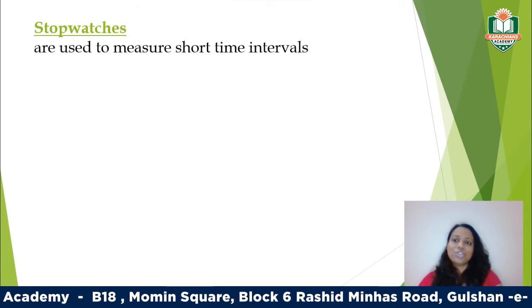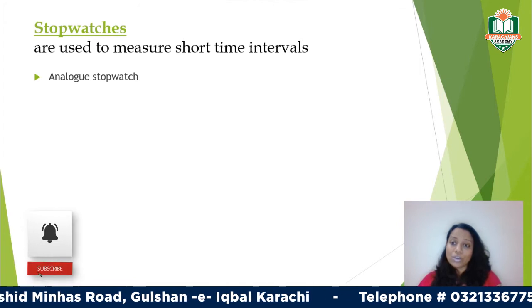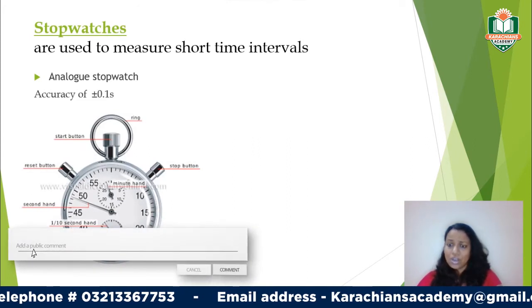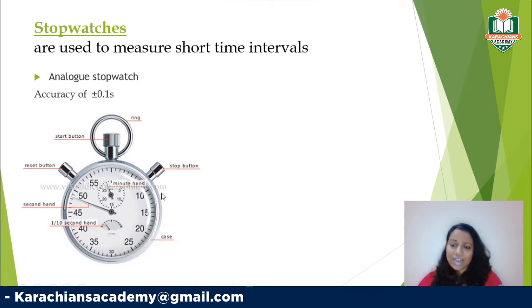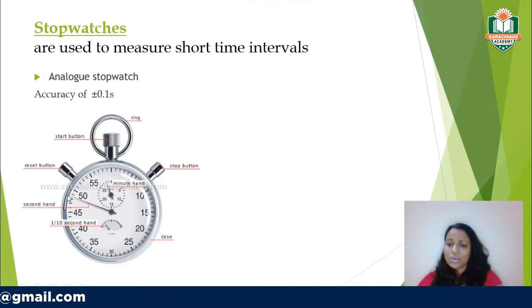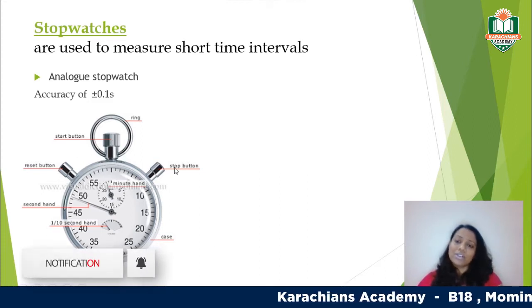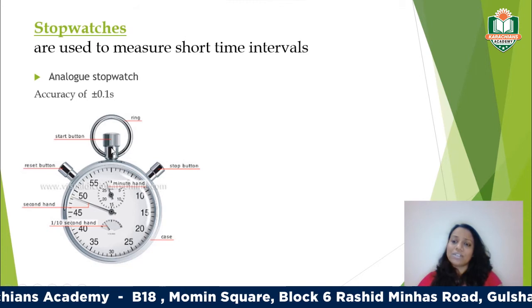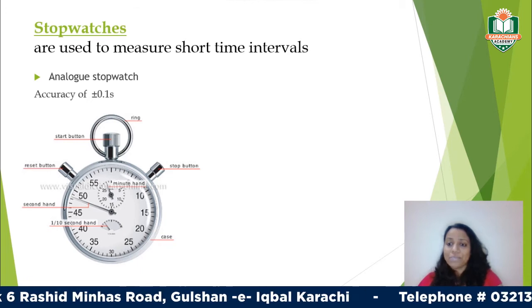Stopwatches are used to measure much shorter time intervals, used in labs and experiments. Looking at the analog stopwatch, it has a full dial starting from zero going all the way around to 60. You have a start button, a stop button, and a reset button. Some analog stopwatches have only one button in the center — press once to start, again to stop, again to reset.